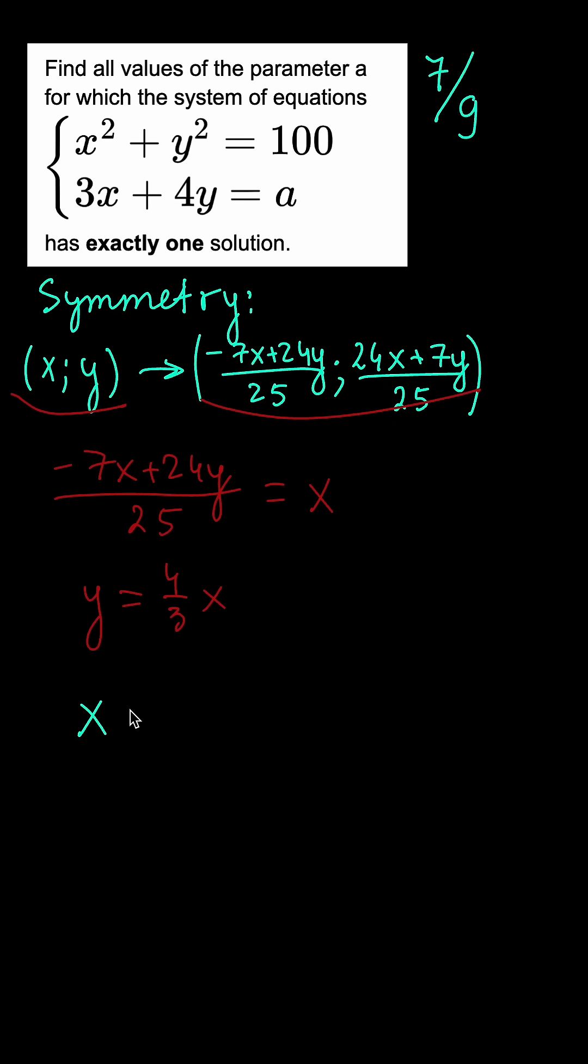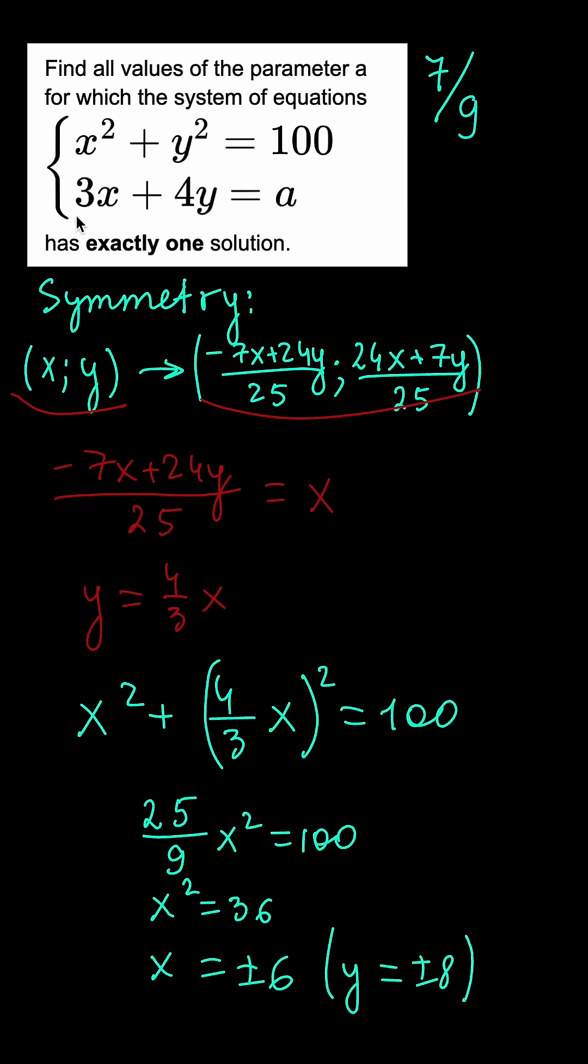Substituting that into the first equation gives us two points. We can see that x equals plus or minus 6, corresponding values of y are plus or minus 8, and plugging either of them in the second equation gives us the values of the parameter. a equals plus or minus 50. And that's the answer.